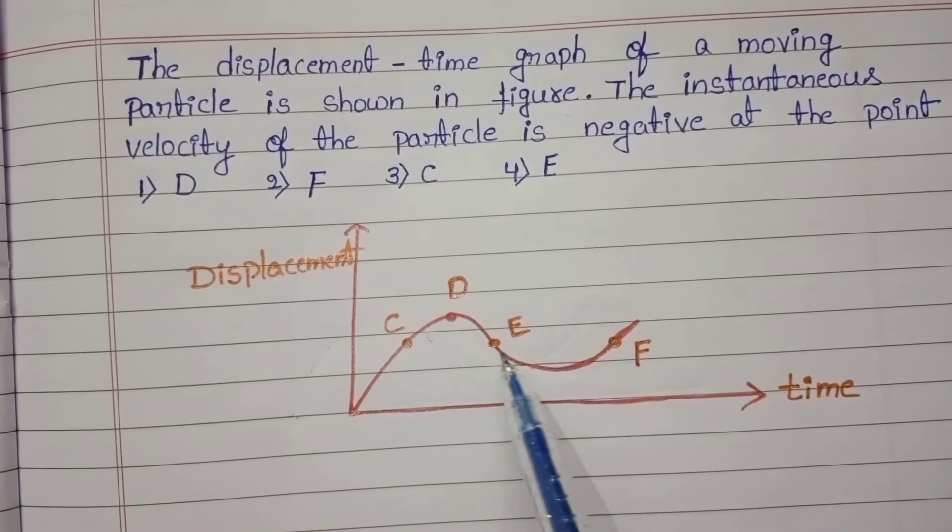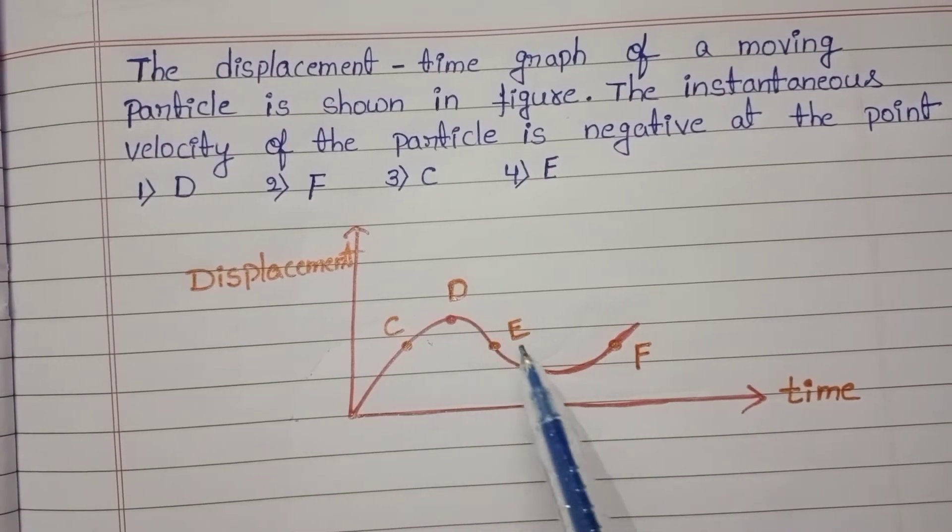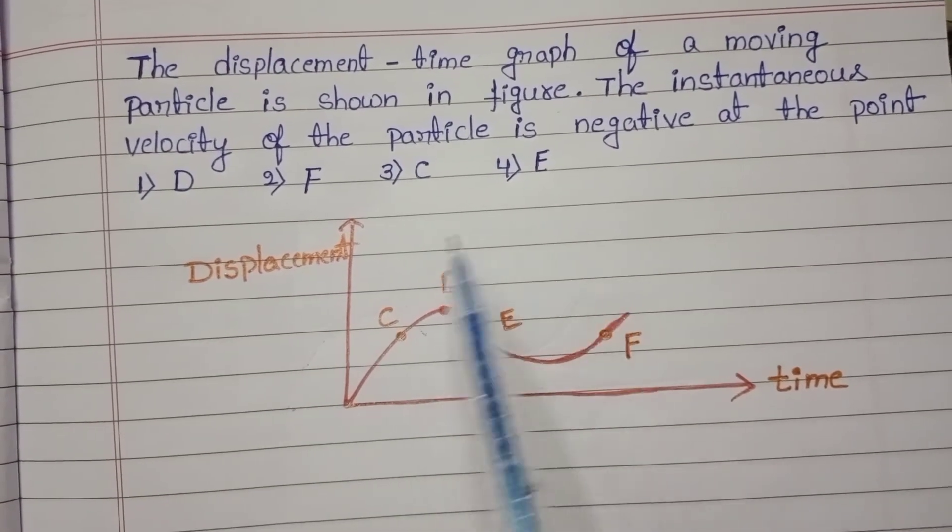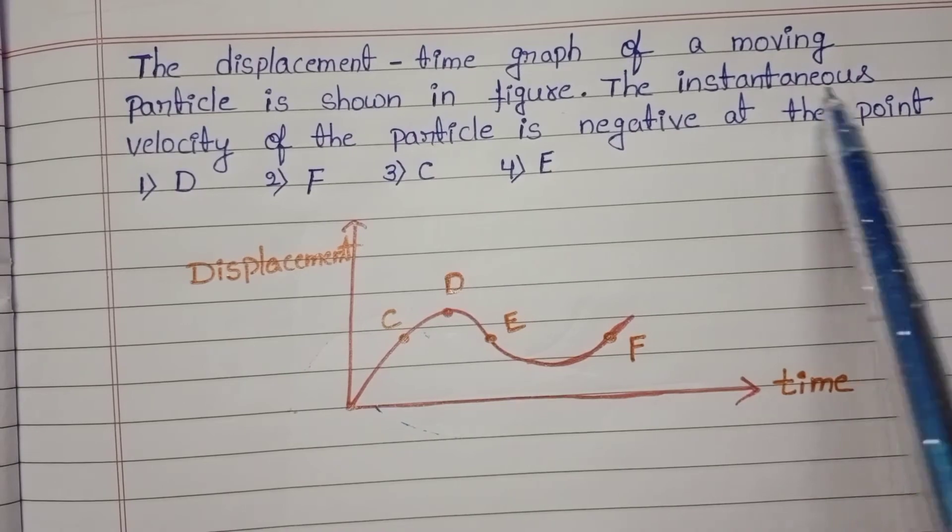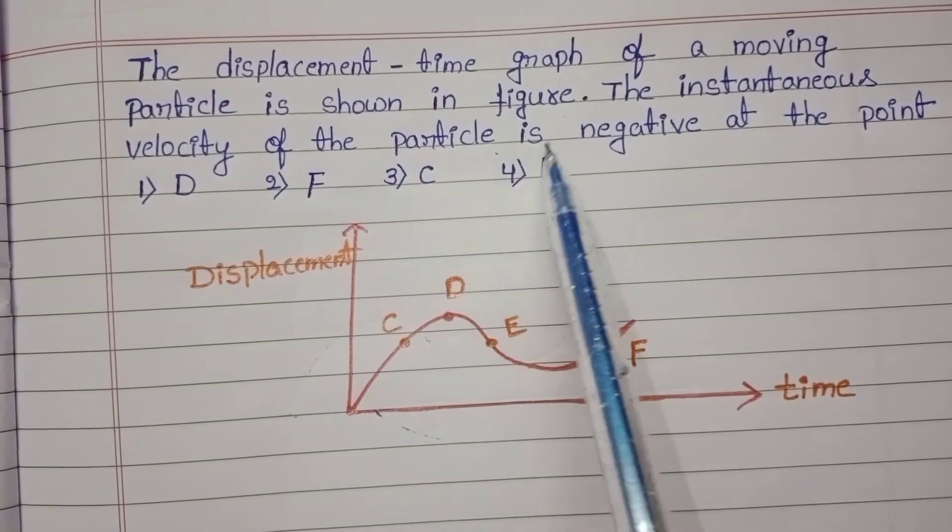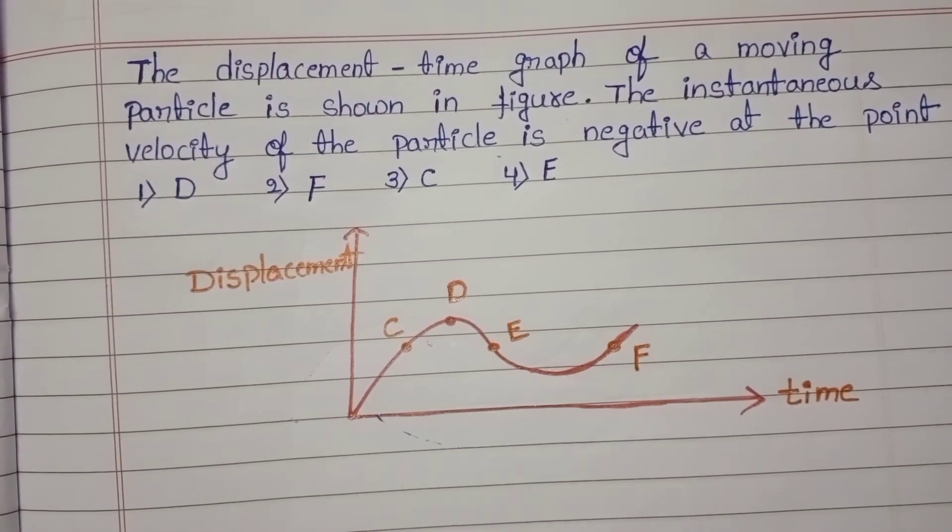Here different points on this curve C, D, E, F. So in these points, the instantaneous velocity of the particle is negative at the point.